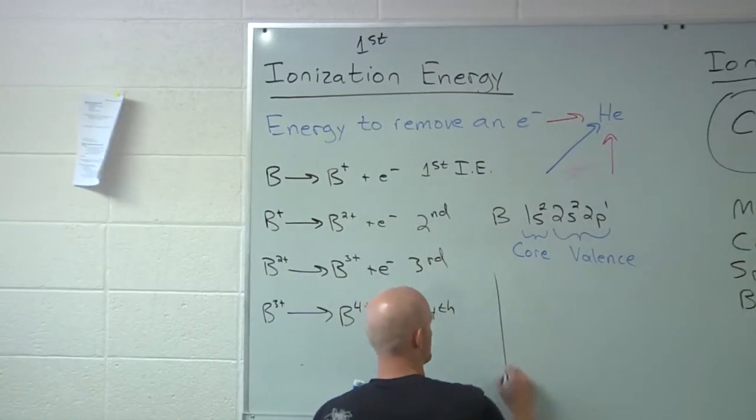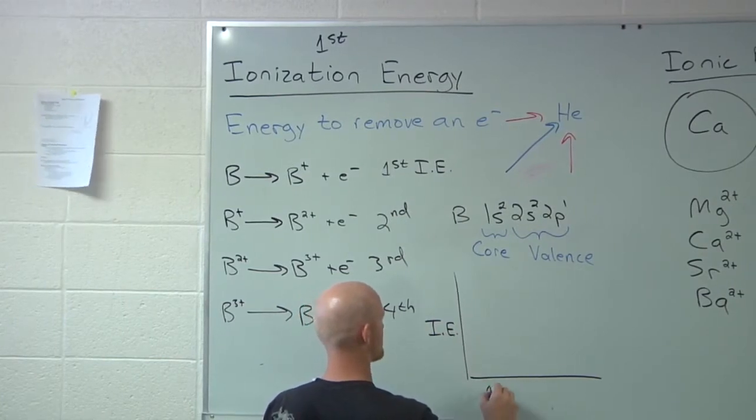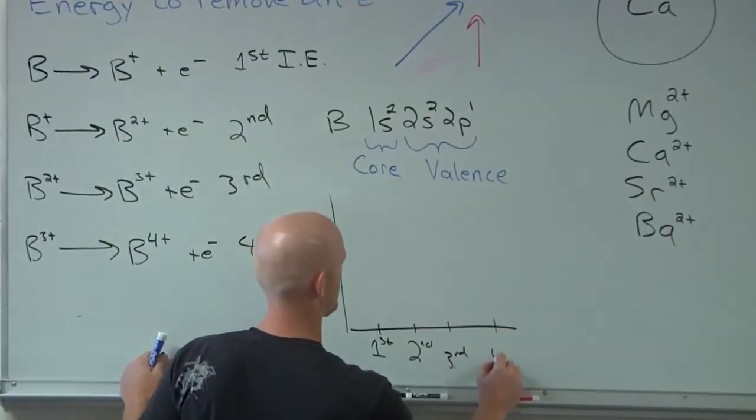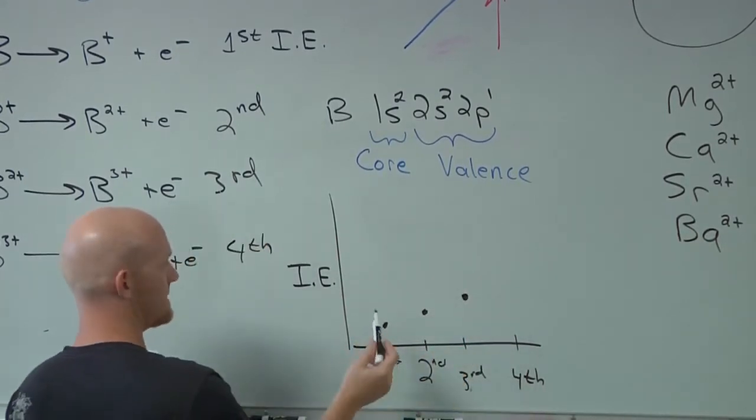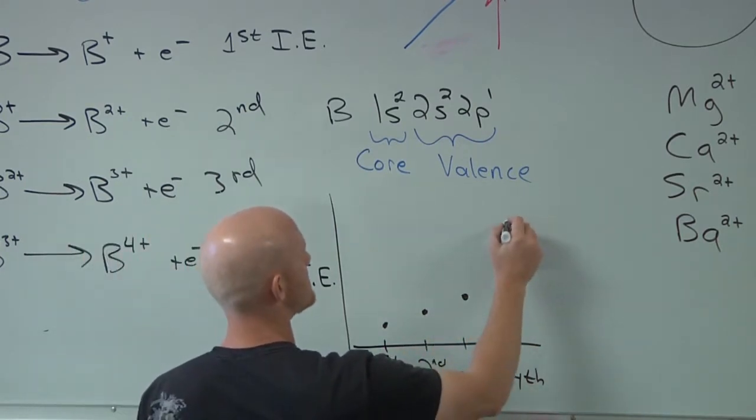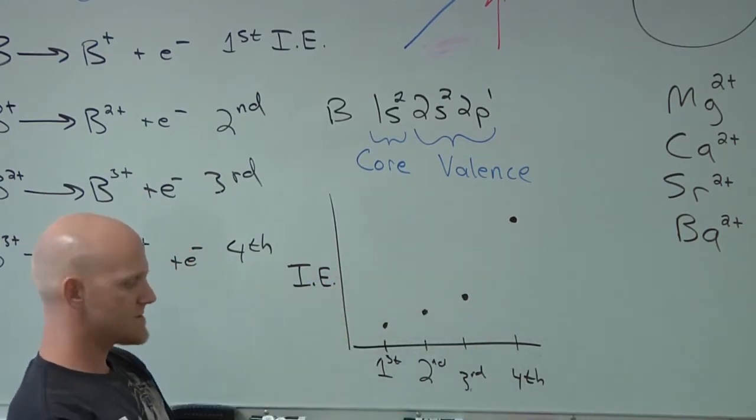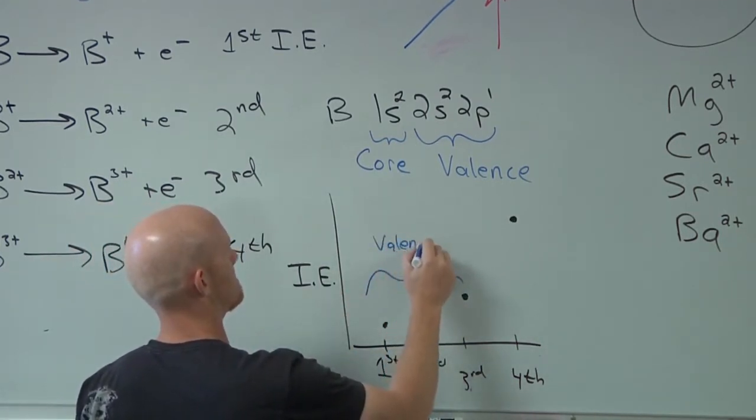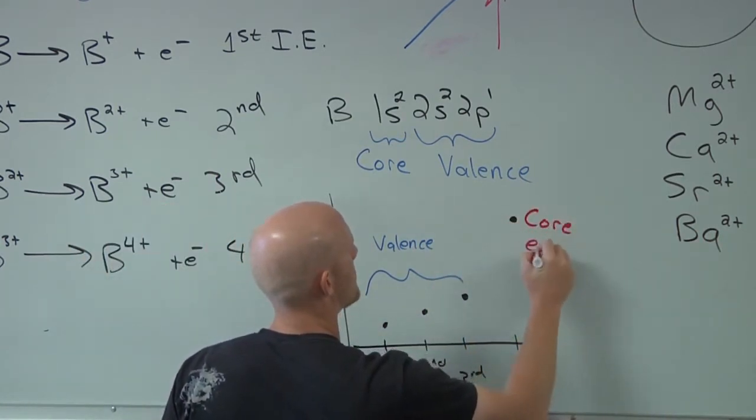You typically see this big jump. If we actually plotted this, the ionization energy of boron, we'd start with our first and our second, third, fourth, and we'd see this gradual upward trend. These could go from like a thousand to two thousand to three thousand. It looks pretty linear. And all of a sudden you get a huge jump in ionization energy. From a graph like this, you might see these were valence, and where I got the big jump, this guy must have been a core electron.